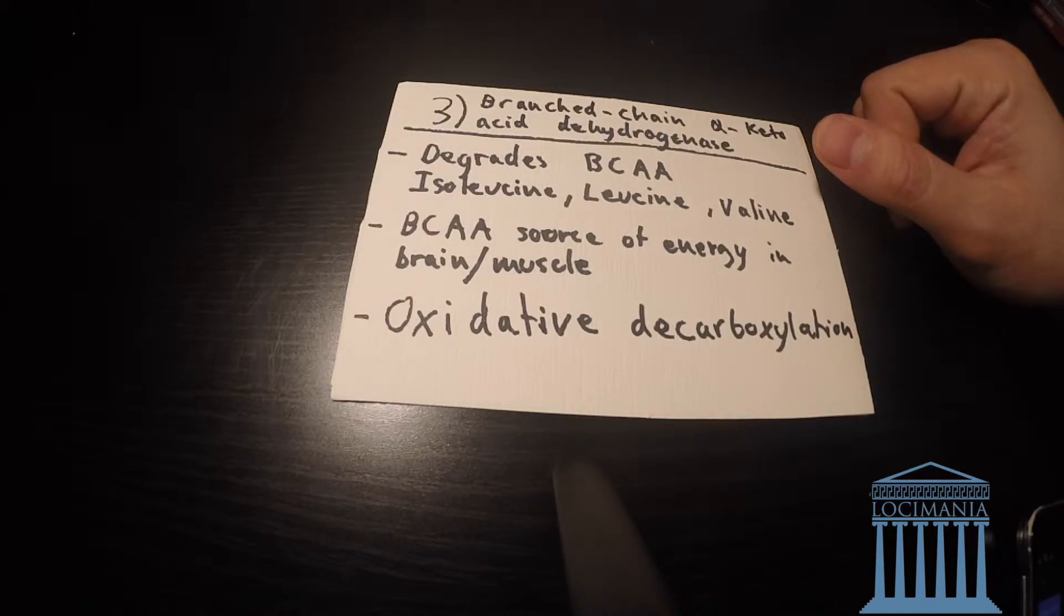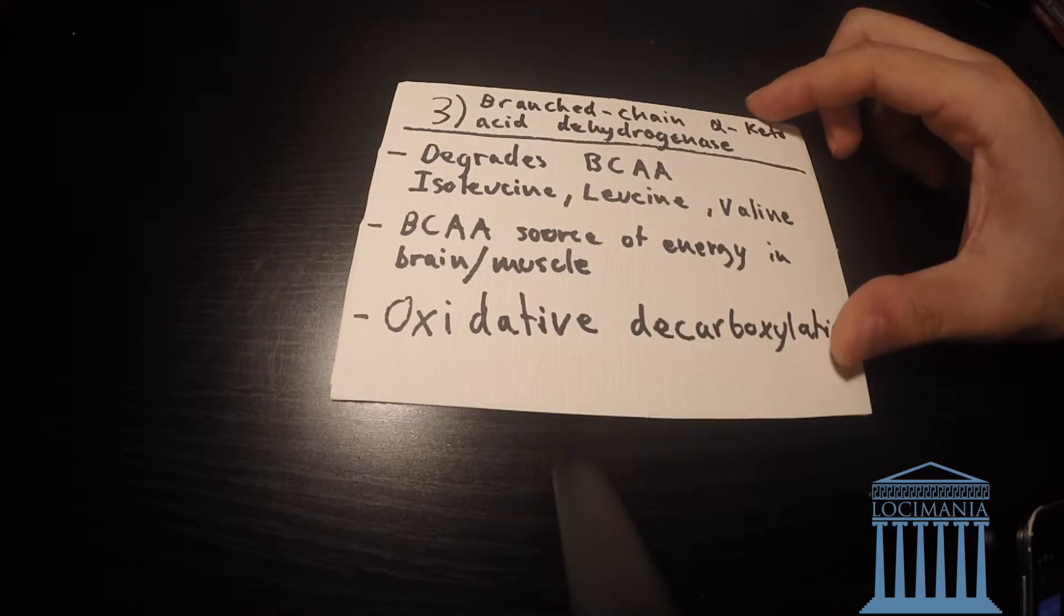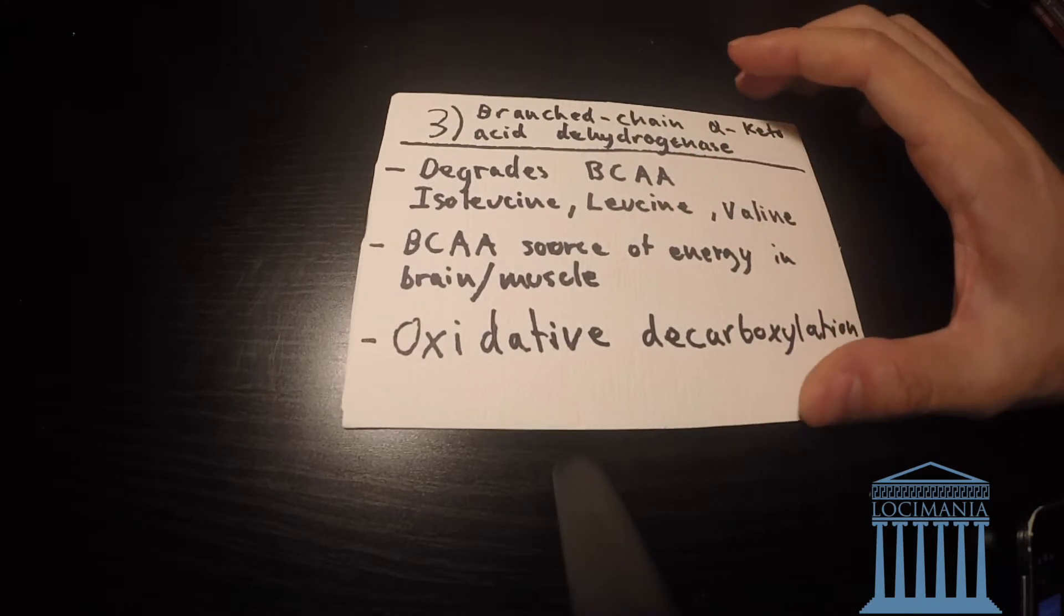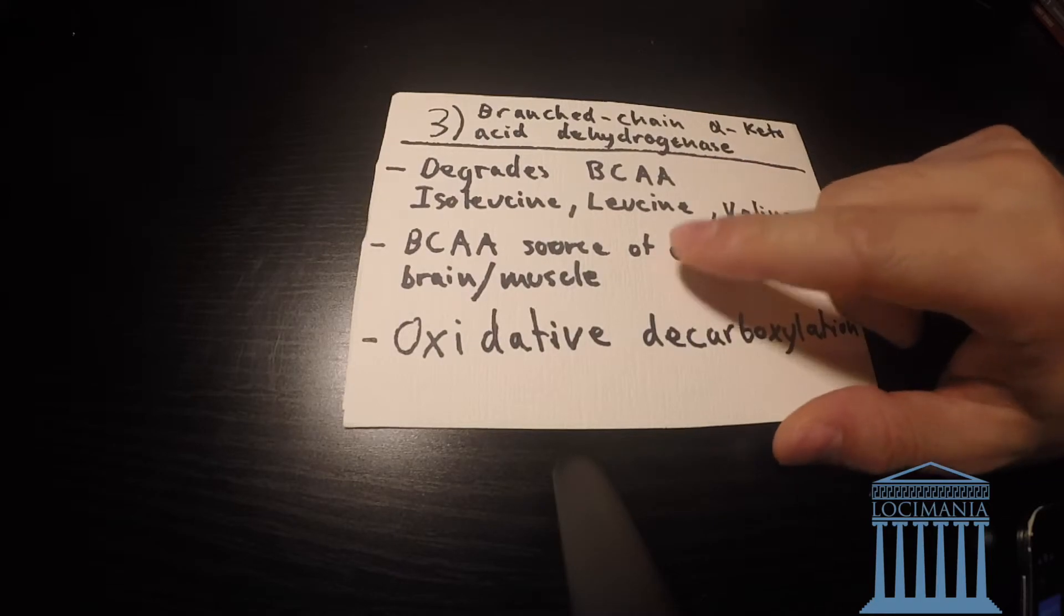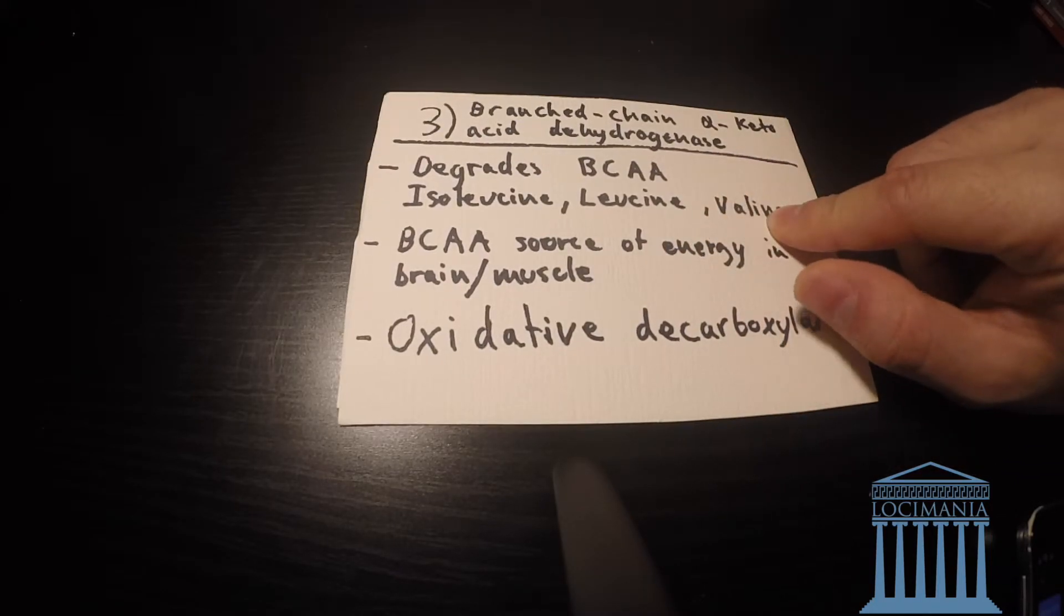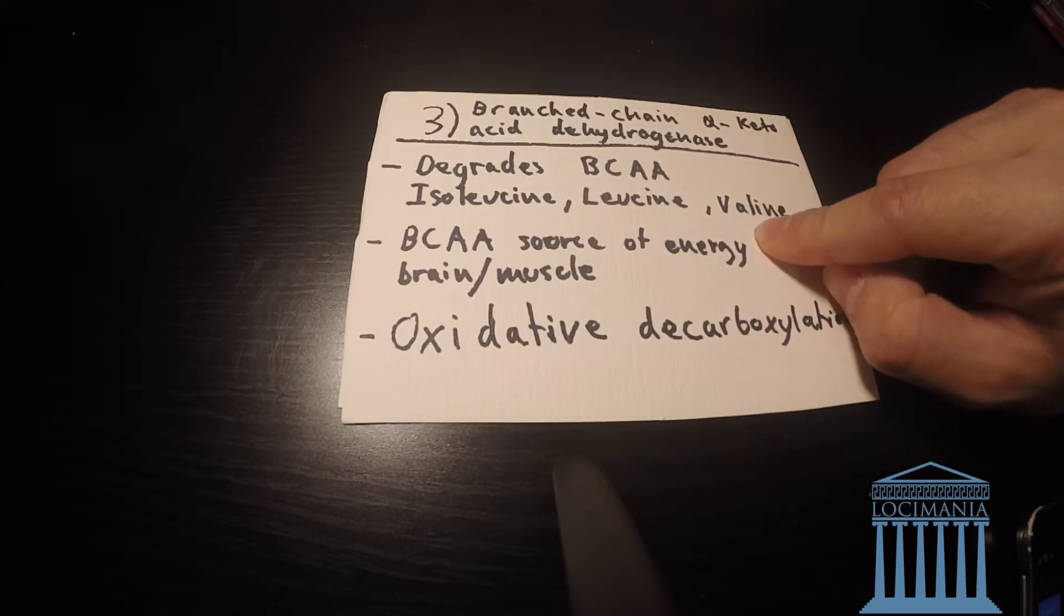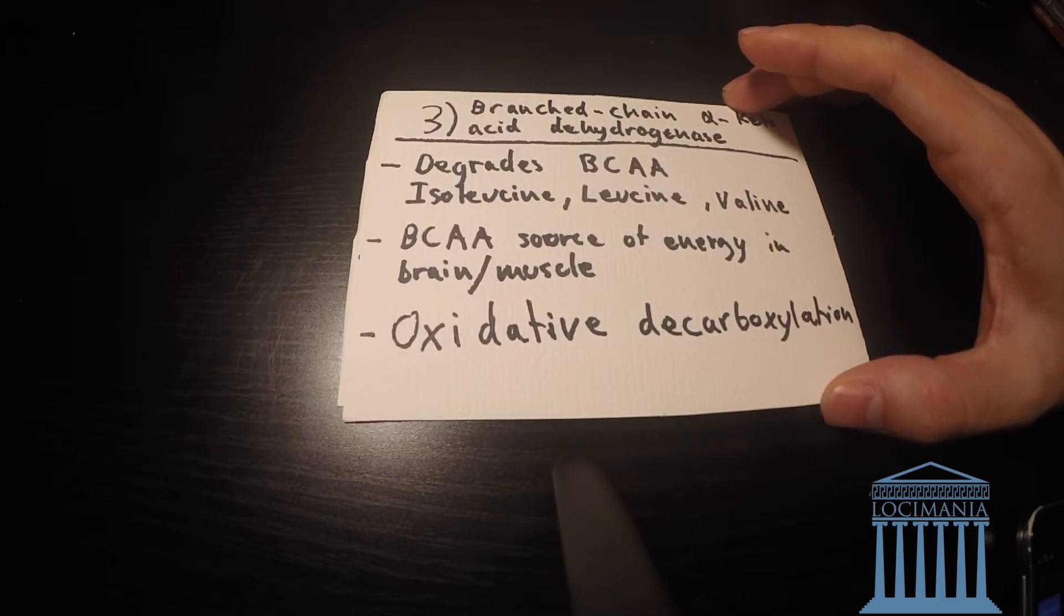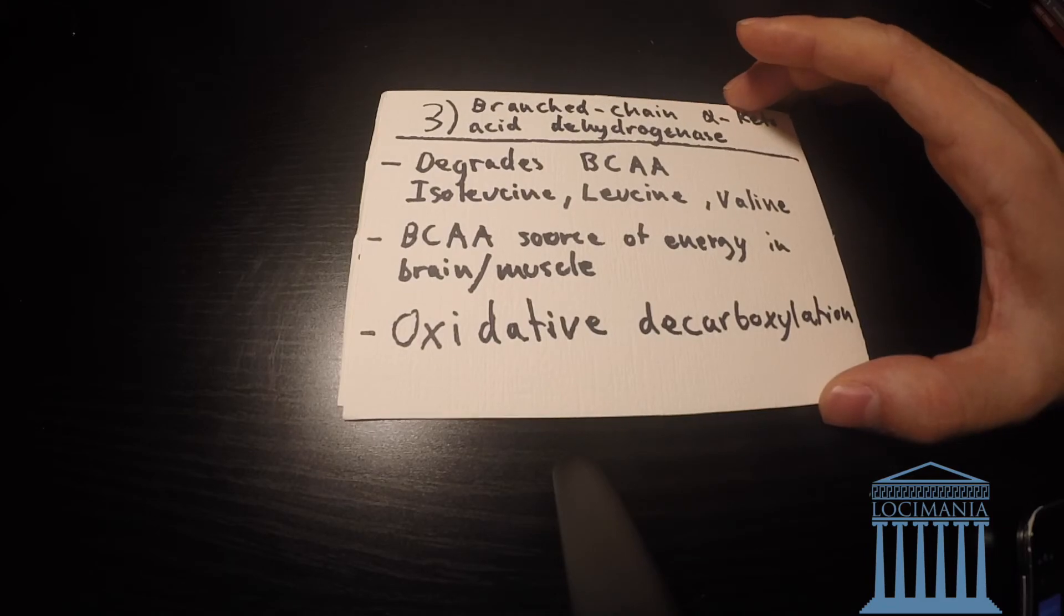The third enzyme is branched-chain alpha-ketoacid dehydrogenase. It degrades BCAAs, branched-chain amino acids: isoleucine, leucine, and valine. BCAAs are a source of energy in the brain and muscle. The reaction type is oxidative decarboxylation.